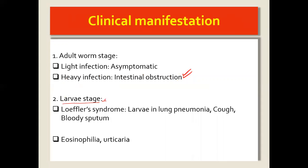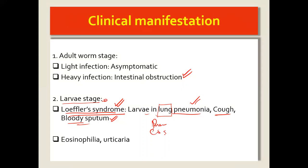In the larval stage, the larvae penetrate the mucosa and travel through the vessels up to the lungs, causing a syndrome called Löffler's syndrome. Here the larvae in the lungs cause pneumonia — the patient will have a cough and produce bloody sputum. We may also see eosinophilia, since these are helminthic infections, so eosinophils rise, and urticaria may occur.